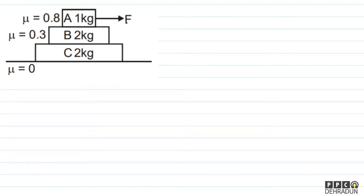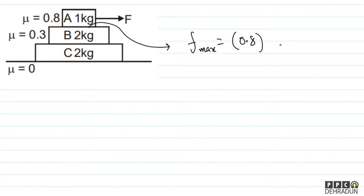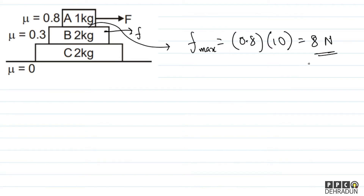The maximum force that can be transmitted by the 1 kg block is basically F_max = μN. The μ given is 0.8 and the normal reaction present here is 10 N, so this comes to 8 N. So the 1 kg block (A) has a tendency to move forward. Friction does not want slipping between A and B, so friction on B acts forward. The maximum value of this friction can be 8 N.